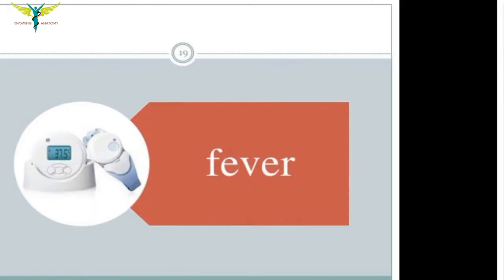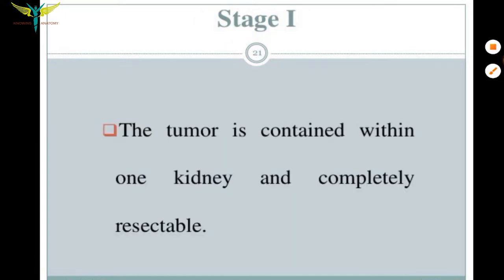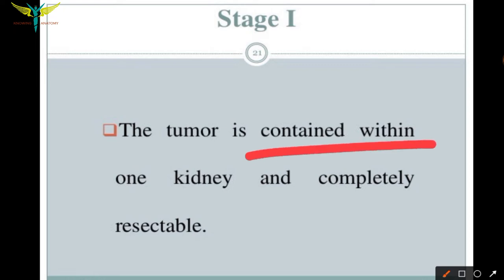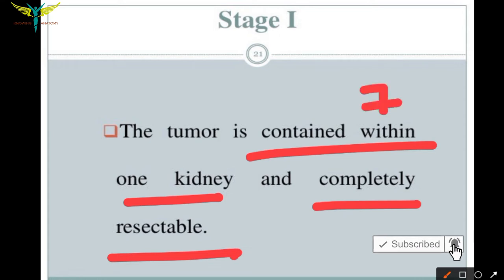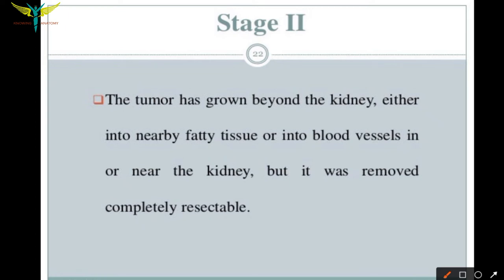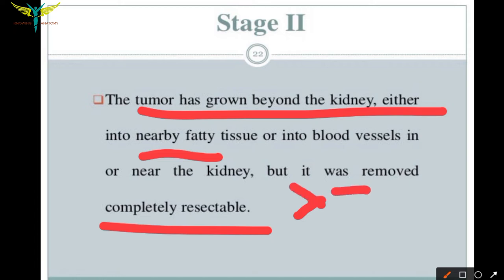Wilms' tumor has five stages. Stage one is when the tumor is contained within one kidney and is completely resectable; this is the starting stage, measuring less than seven centimeters. Stage two is when the tumor has grown beyond the kidney into nearby fatty tissue, blood vessels, or structures near the kidney, but can still be completely resected. Stage two tumors are greater than seven centimeters.